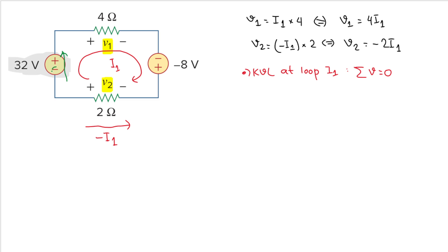The current i1 is flowing from the negative terminal to the positive terminal of the 32V source, so because it enters the negative terminal our sign will be negative: minus 32 volts. Then our current enters the positive terminal of the next element, so we have a plus sign and the value is v1.